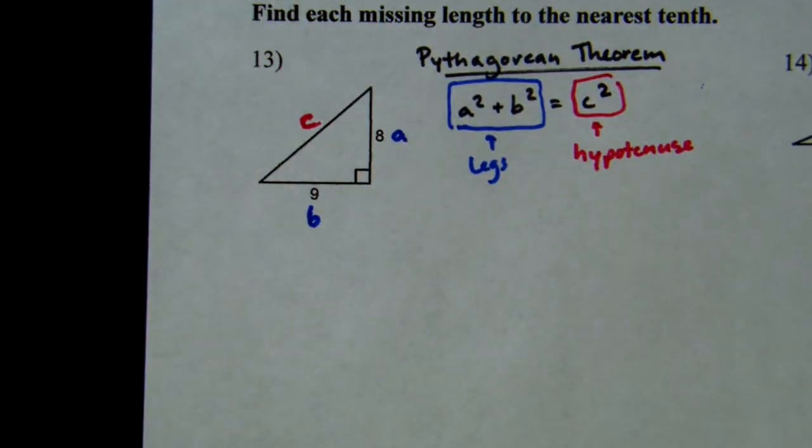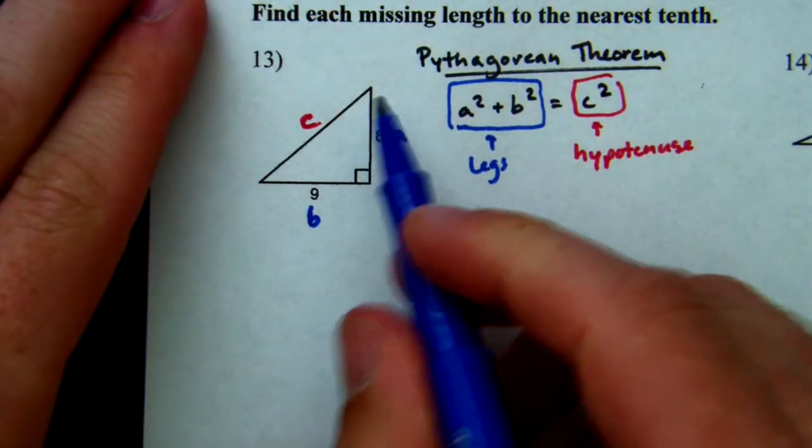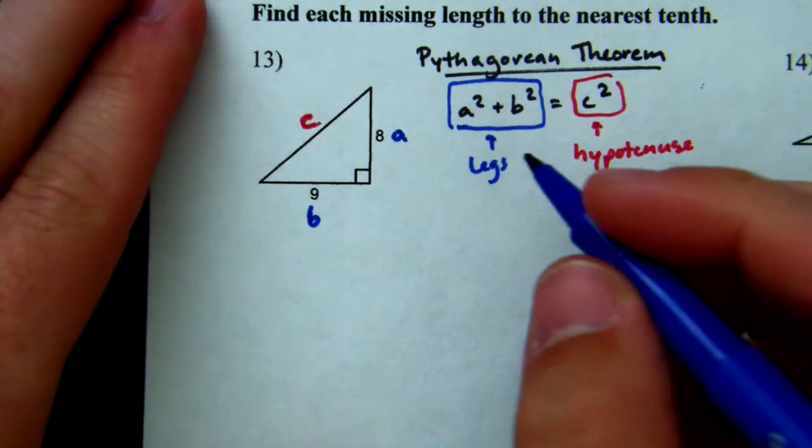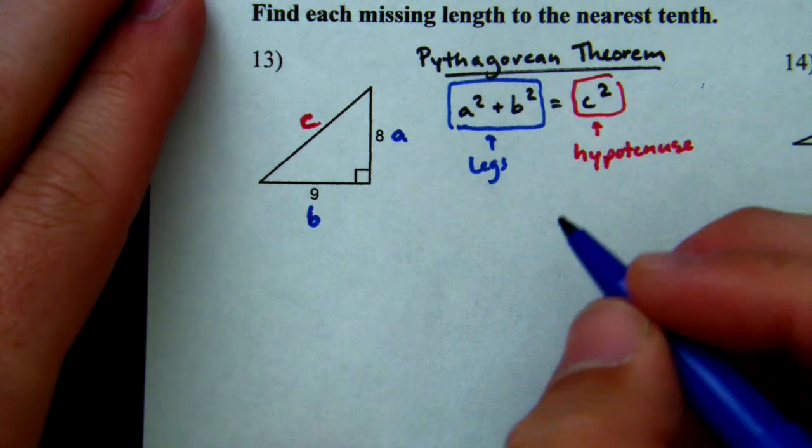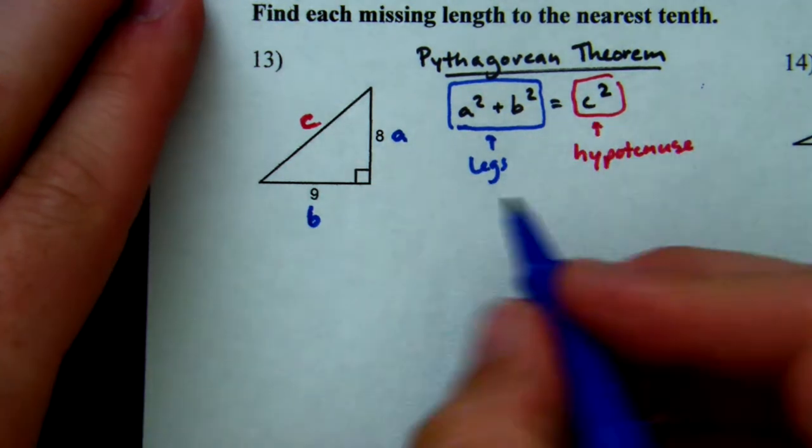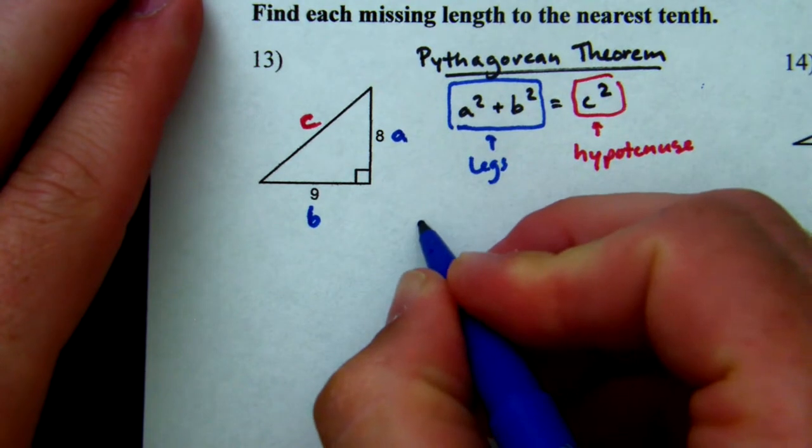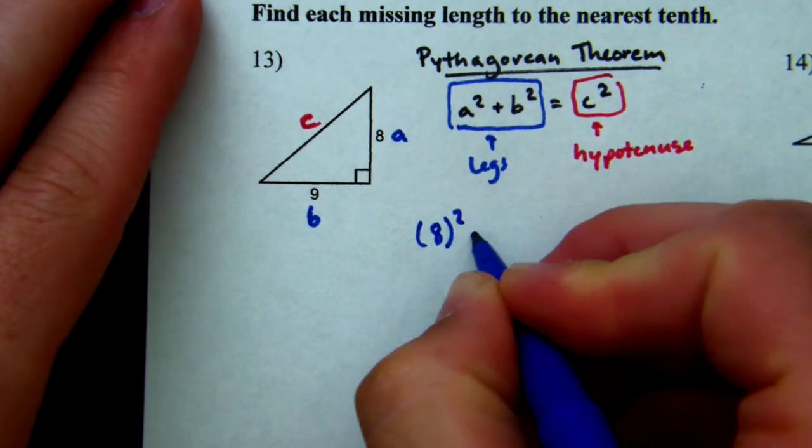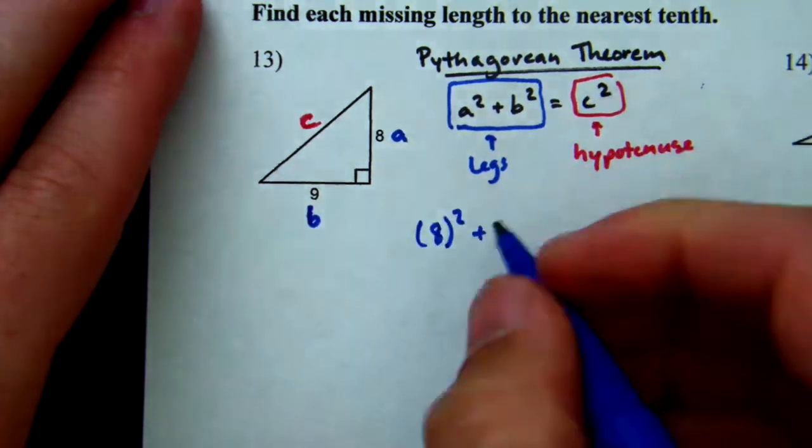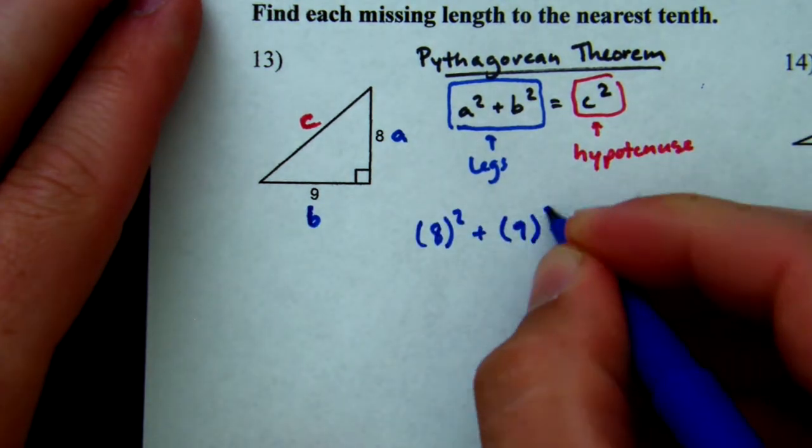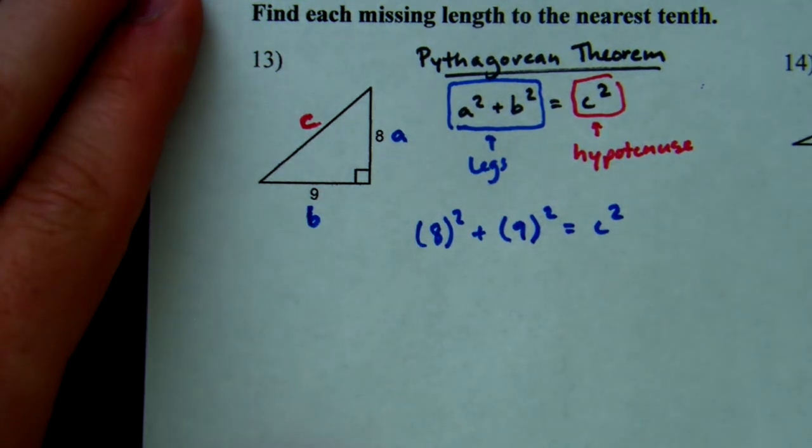So if we are looking for a value, we're looking for the one that we don't have, which is the hypotenuse. So what we're going to do is we're going to plug in our leg values for a and b, and then we're going to try to find our hypotenuse. So a is 8, so I'm going to plug in 8 for a. And then b is 9. That is not a 6. That's a b. So I'm going to say 9 squared equals c squared. Because we don't know what c is, so we're trying to find it.